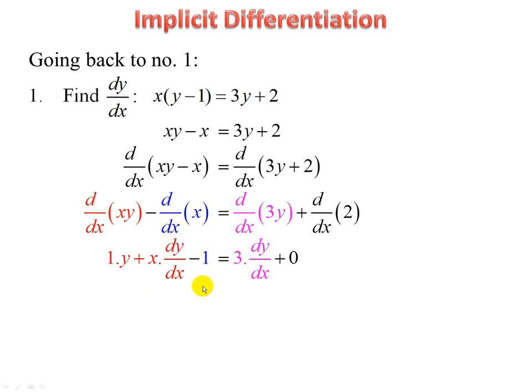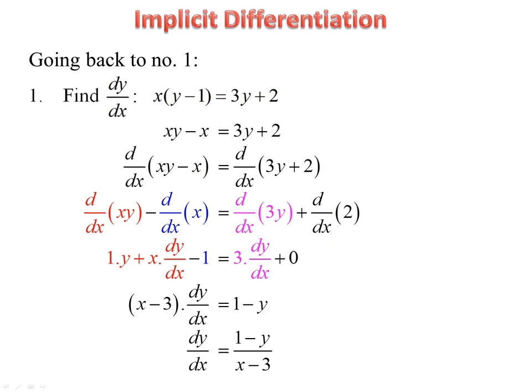There's our product rule: derivative of x times y, plus x times derivative of y, minus 1, equals 3 times derivative of y, plus 0. Collect dy/dx terms, take out a common factor, and divide. There is our derivative. It's fine if there's a y within the derivative, because in applying the derivative, we usually know the original equation — knowing an x, we can find the y, and then substitute into the derivative.